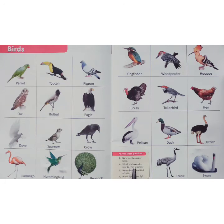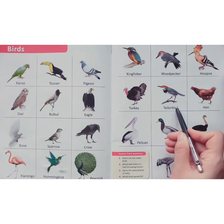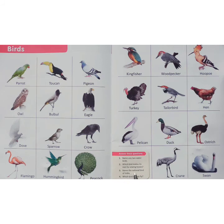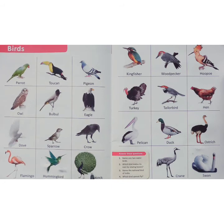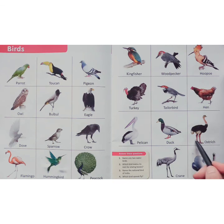Now second: which bird makes its nest by sewing leaves? The answer is tailor bird. Very good. Name the national bird of India. The answer is peacock — this is the national bird. Next, which bird cannot fly? Ostrich cannot fly.